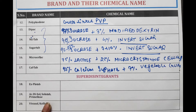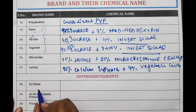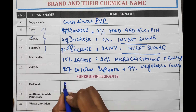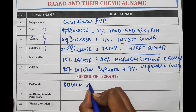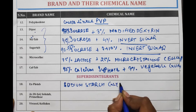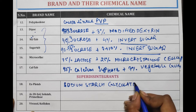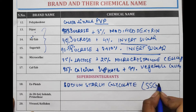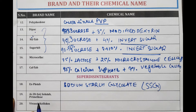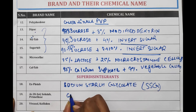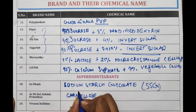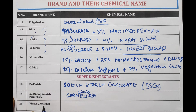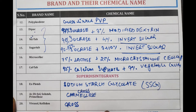Now we will discuss some brand names of super disintegrants. Explotab is the brand name of the well-known super disintegrant Sodium Starch Glycolate, majorly known as SSG. Ac-Di-Sol, Solutab, and Primolose are brand names of cross-carmellose. Vivasolcolidone is the brand name of cross-povidone.